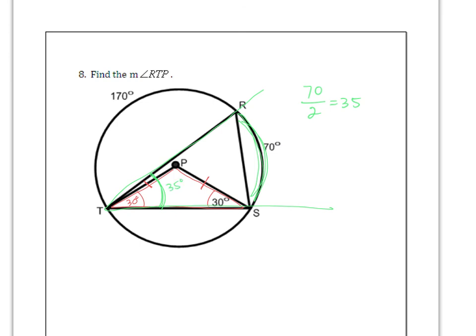Now remember, what we're looking for is this little sliver. So what I would do is take the 35 and subtract the 30, and you should have the sliver left. So 35 minus 30, of course, is 5 degrees, and that is the measure of angle RTP.